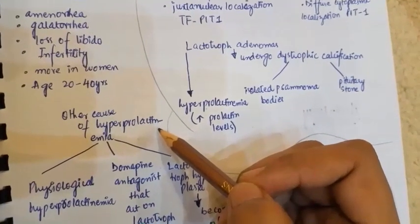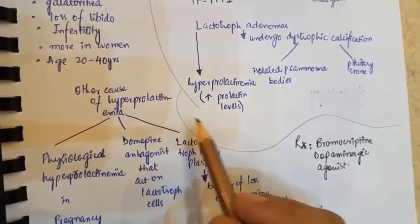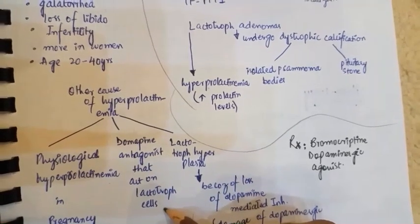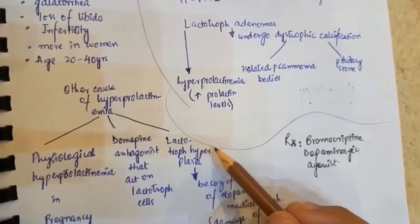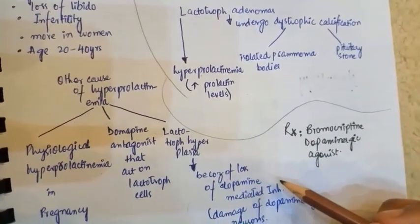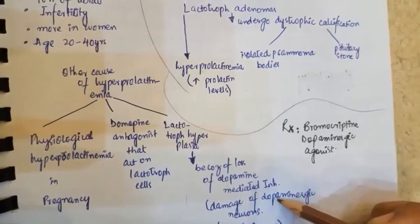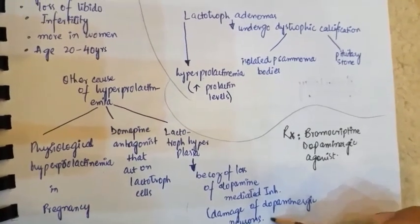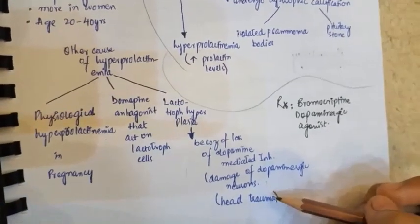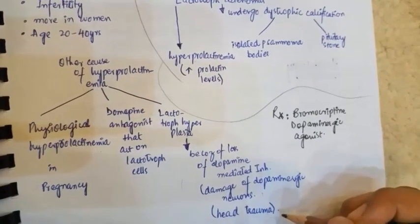Other causes of hyperprolactinemia besides lactotroph adenomas include physiological hyperprolactinemia in pregnancy, dopamine antagonists acting on the lactotroph cells, lactotroph hyperplasia due to loss of dopamine-mediated inhibition because of damage to dopaminergic neurons. Dopamine has an inhibitory effect on the lactotroph cells, and damage to dopaminergic neurons may be due to head trauma.